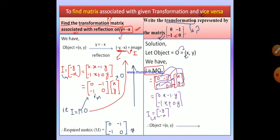Let's compare the object and image. Object is X comma Y and image is minus Y comma minus X. If you are familiar with those formulas, you can say this is a reflection on Y equals to minus X. So the given matrix represents reflection on Y equals to minus X.